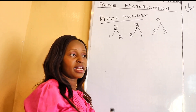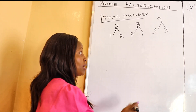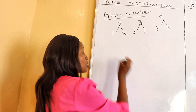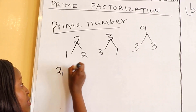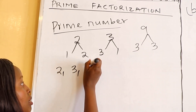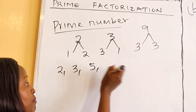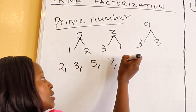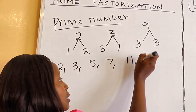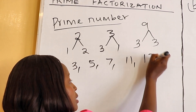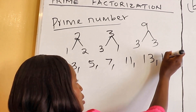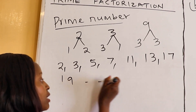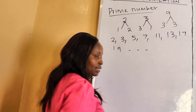Let's list examples of prime numbers. The first prime number is two, followed by three, five, seven, eleven, thirteen, seventeen, nineteen — and the list is endless.